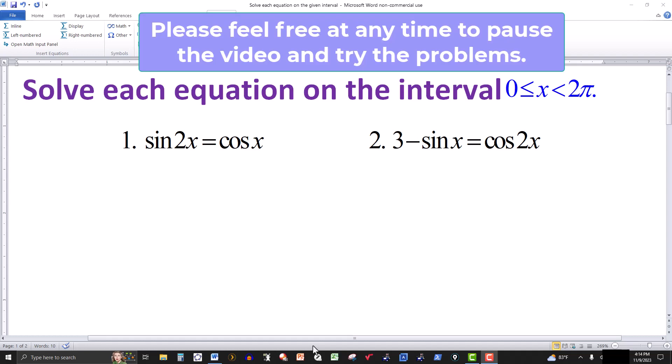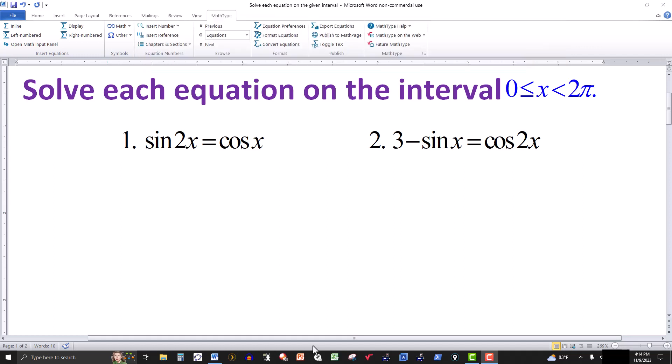In this video, we're going to solve two trig equations in the interval from 0 to 2π. The 0 is included, the 2π is not. So let's look at the first one. We have sin(2x) = cos(x). Normally we want just x and x here. We want the function to be the same if possible.